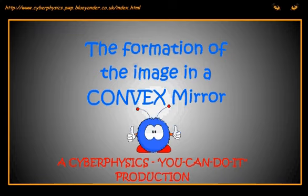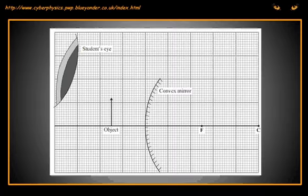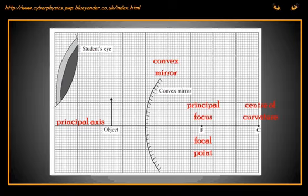This video clip shows you how to answer a typical examination question that requires you to construct a ray diagram. The diagram is of a convex mirror. The principal axis, mirror symbol, principal focus, and center of curvature of the mirror are already on the diagram.